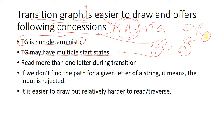The second concession is that a transition graph may have multiple start states. The third concession is that you can read more than one letter during a transition.